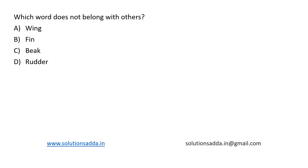This is a question from aptitude: which word does not belong with the others — wing, fin, beak, and rudder? Wing, fin, and rudder are all parts of an aeroplane.